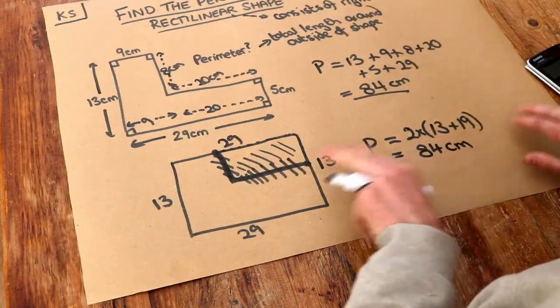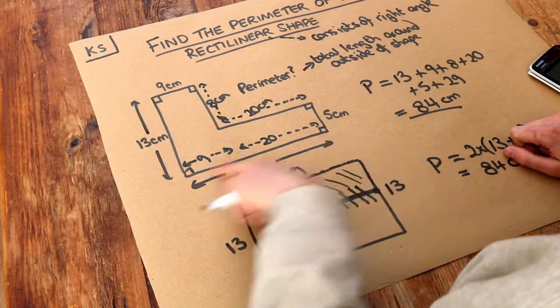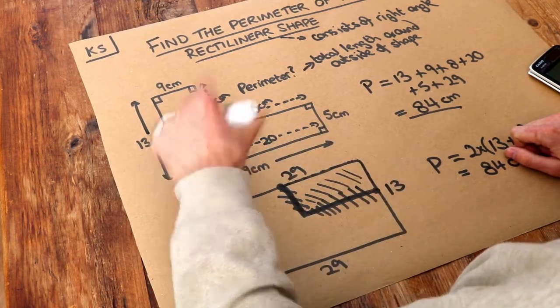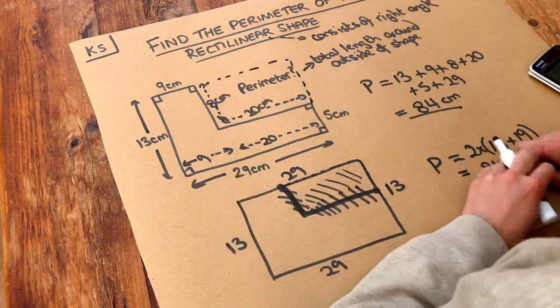So if you want to use this faster method, you're welcome to. So you just use the total height of the diagram, the total length of the diagram. Add them together and times by two. Because you imagine the whole thing as one big rectangle.